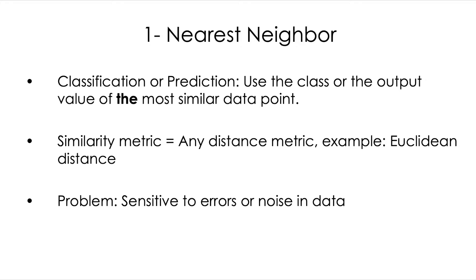The main problem with the one nearest neighbor approach is that it is too sensitive to errors or noise in data. If we have any noisy data point, it is going to affect all the neighborhood for the predictions.